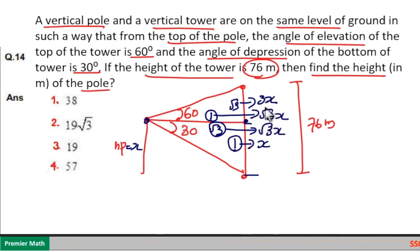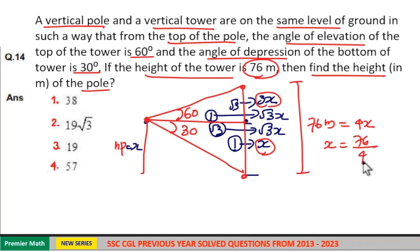This means 3x plus x is the total height of the tower, which is 4x. Then x is equal to 76 by 4, which is 19 meters. So option 3 is your answer.